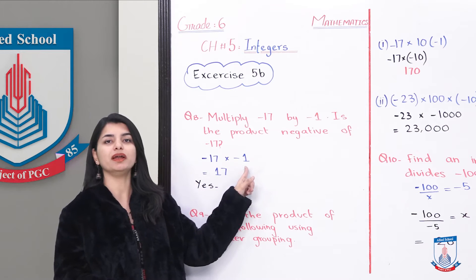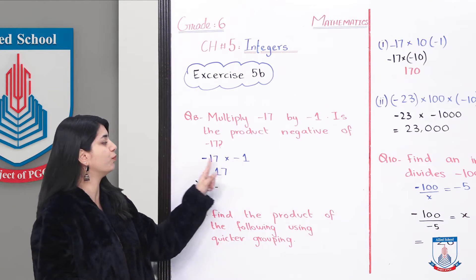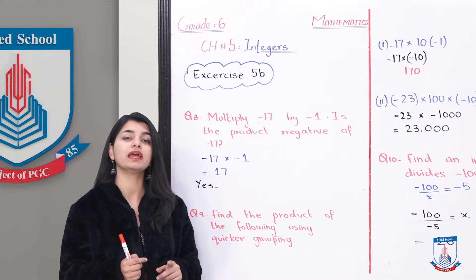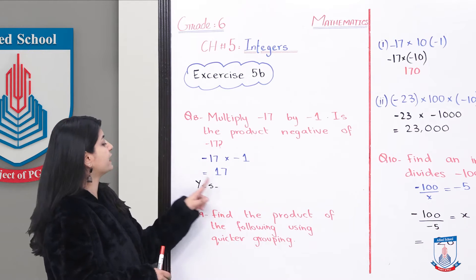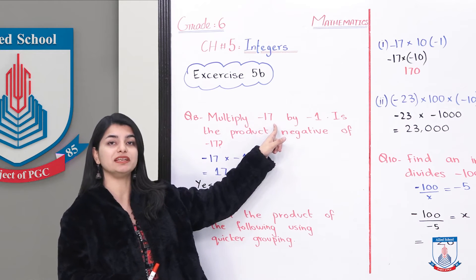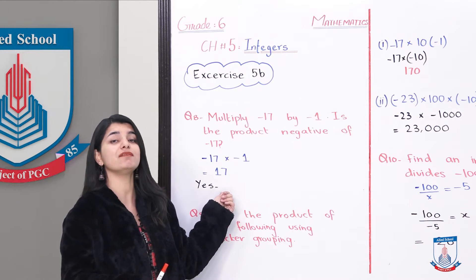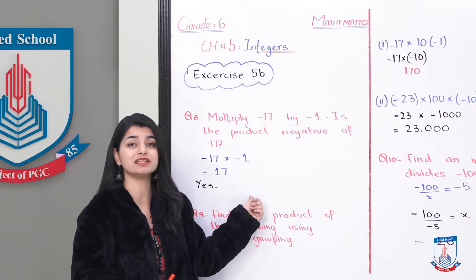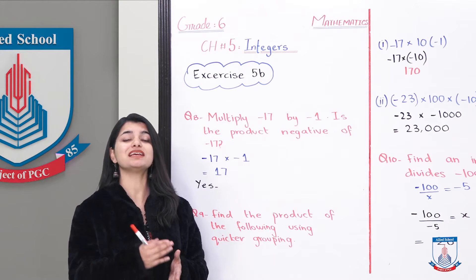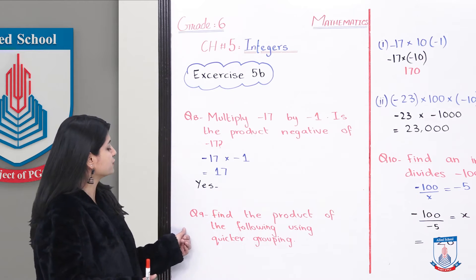The answer of 17 multiplied by 1 is 17. So the answer will be yes — the product of minus 17 multiplied by minus 1 is indeed positive 17, which is the negative of minus 17. Now let's look at the next question.